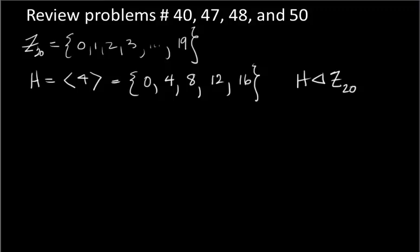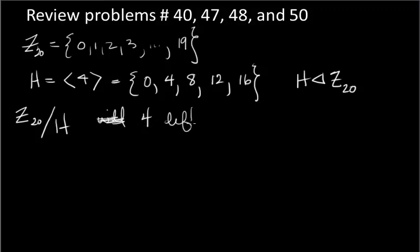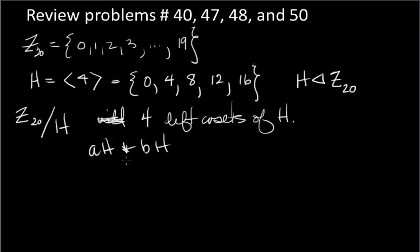So we can look at the factor group Z20 mod H. We know how many cosets it will have: H has 5 elements, and Z20 has 20, so Z20 mod H has 4 left cosets. Our operation star here is defined as AH star BH equals A plus B times H, since the group operation is addition.